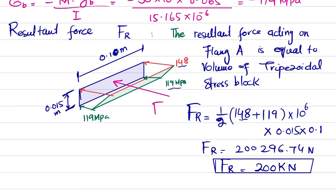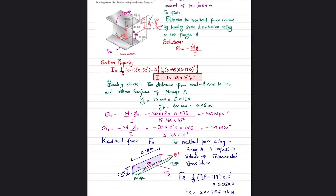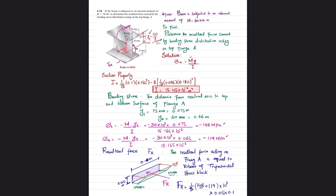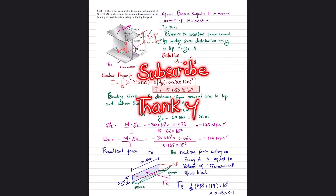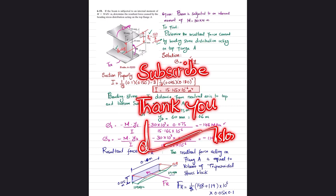This is the resultant force caused by the stress distribution on the top and bottom of the flange. That was all about problem 6-53. I hope you enjoyed this video and learned from it. If you're new to my channel, please subscribe and press the bell icon for notifications. You can ask questions in the comment section. Thank you for watching.